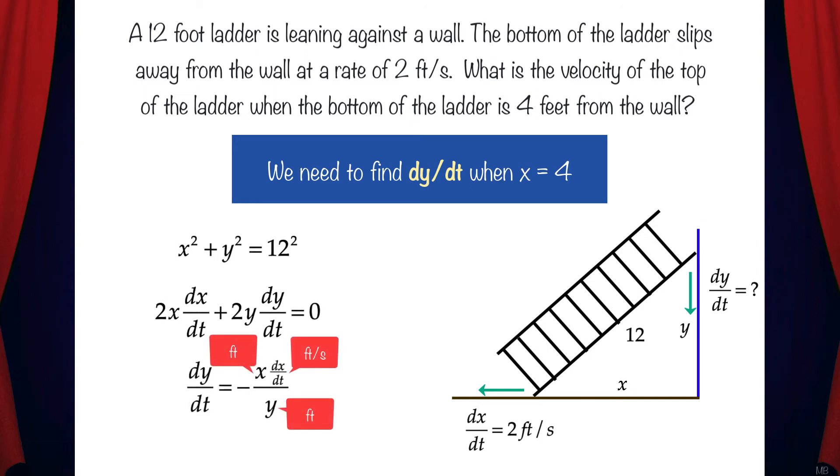Let's do a unit analysis of the dy/dt equation. x is feet, y is also feet, and dx/dt is feet per second. That means dy/dt will end up being feet per second.